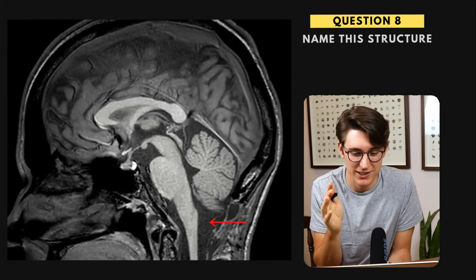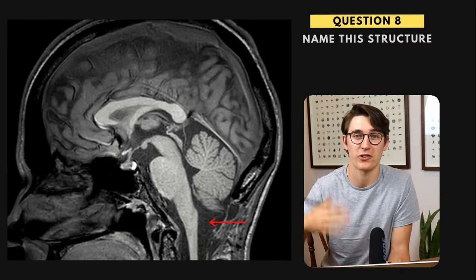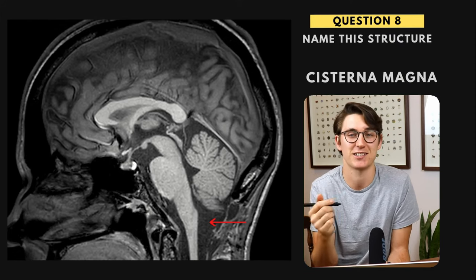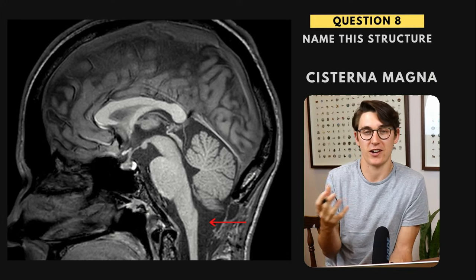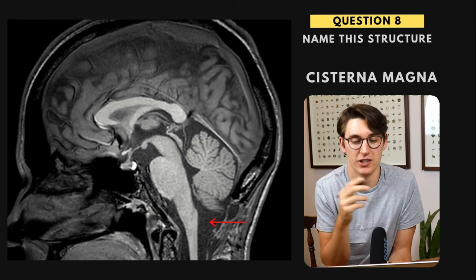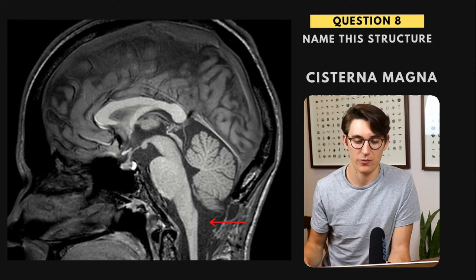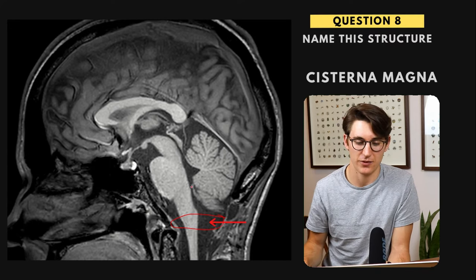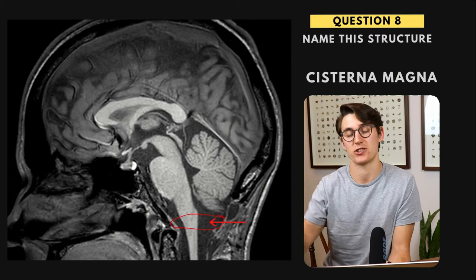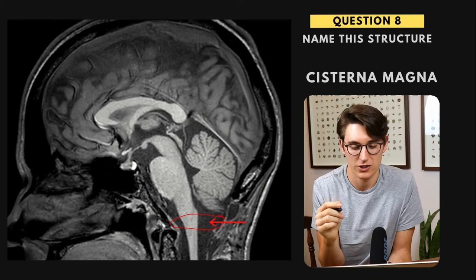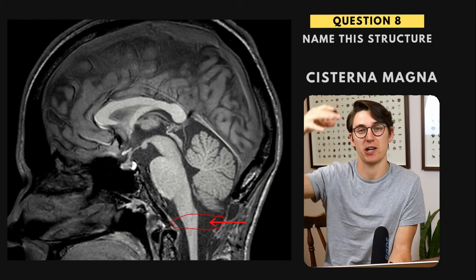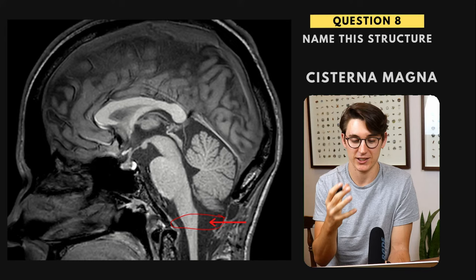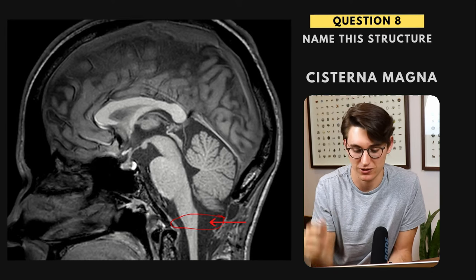Question eight — we've got a midline sagittal slice, and we're asked to label this space, which is the cisterna magna. There are multiple cisterns that house CSF in the brain outside of the ventricular system, and this is the largest cistern. We are at the level of the foramen magnum, and the foramen of Magendie drains into this cisterna magna. If that space starts to get obliterated, it may indicate coning of the brain or obstructive hydrocephalus higher up, so we need to know what the cisterna magna looks like normally.